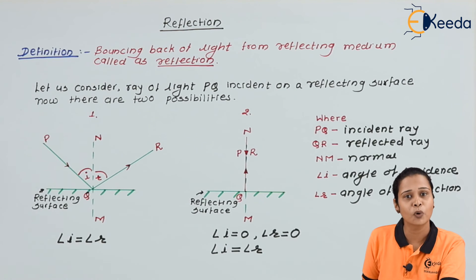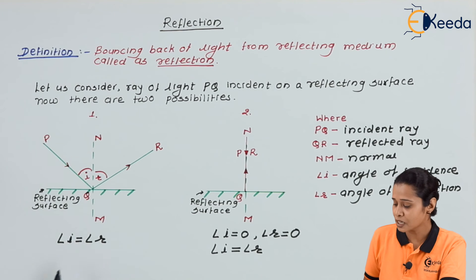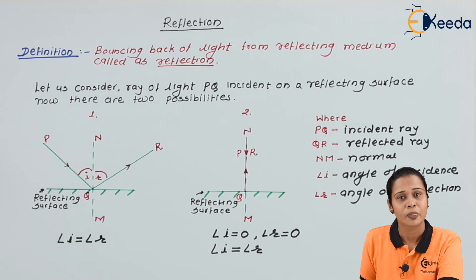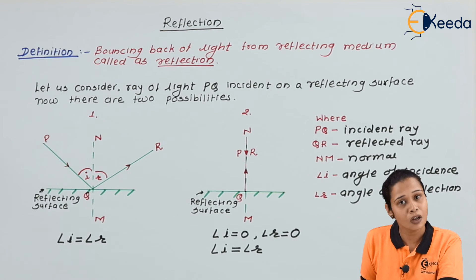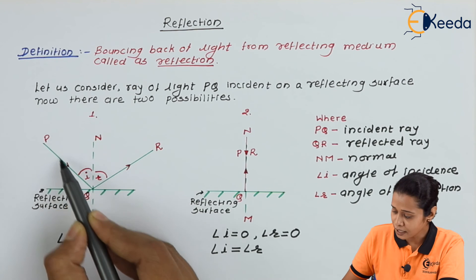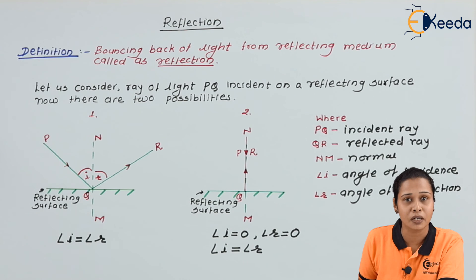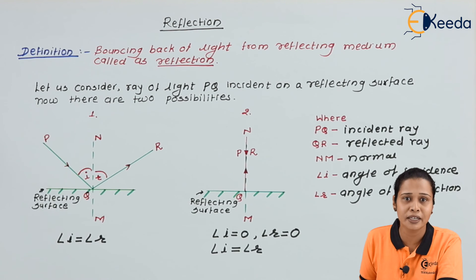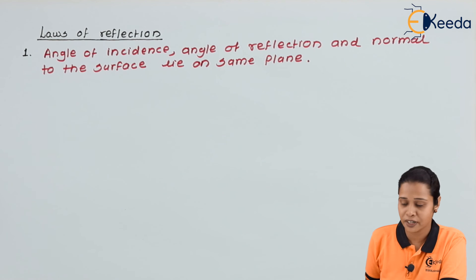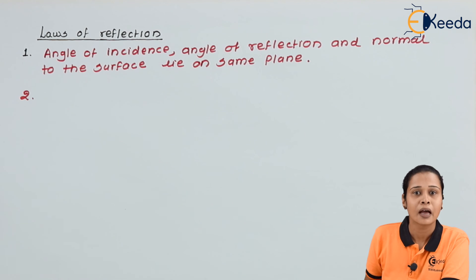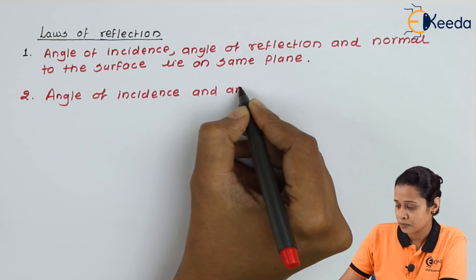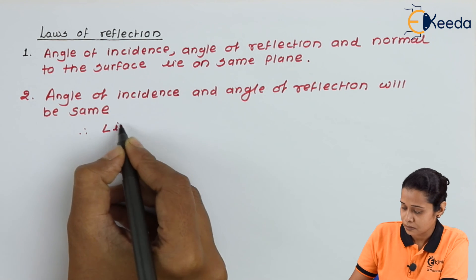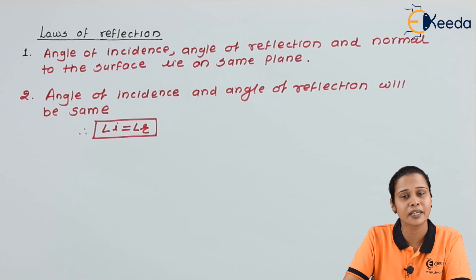Now, there are two important laws of reflection. The first law, which we proved using the principle of least time, states that the angle of incidence is always equal to the angle of reflection. The second law is that the incident ray, reflected ray, and the normal all lie in the same plane. In this way, we can explain the concept of reflection.